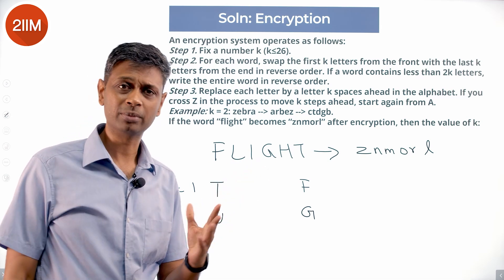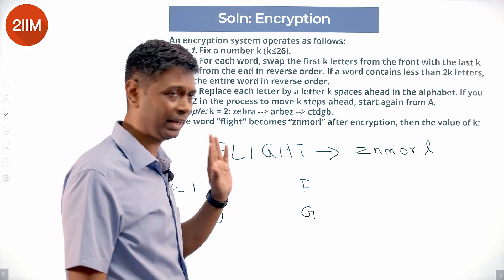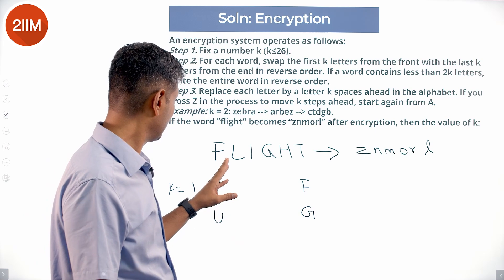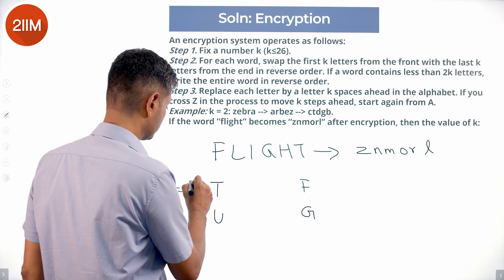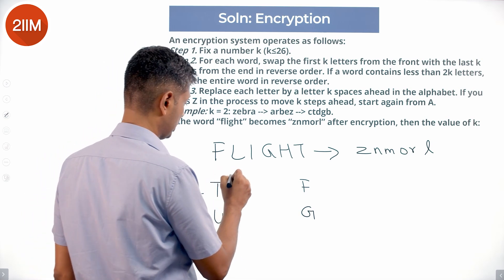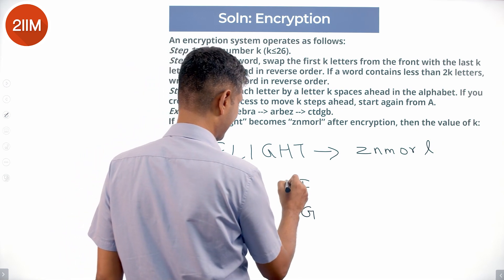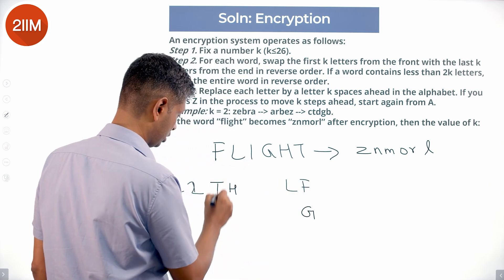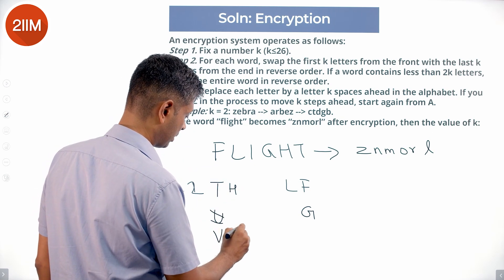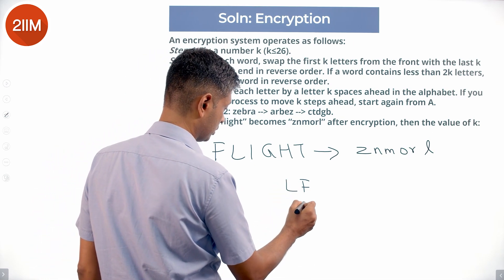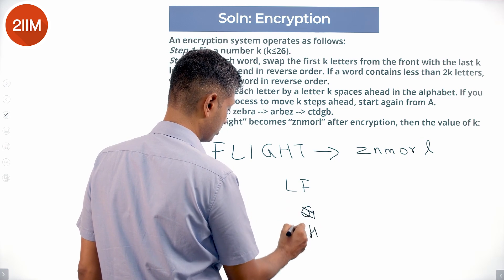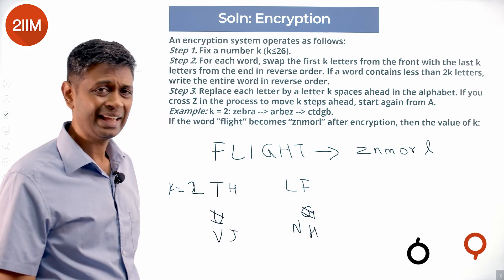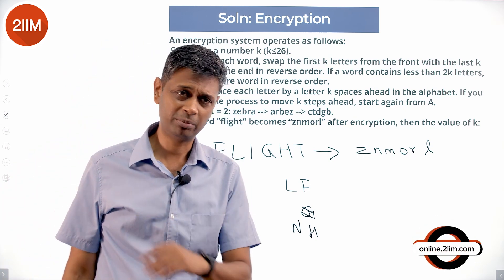Since k is not 1, could k be 2? If k were 2, then T and H would be at the start, and L and F would be at the end. T would become V, H would become J, F would become H, and L would become N. That doesn't match the target Z-N-M-O-R-L either, so k is not 2. Let's check k equal to 3, 4, 5, 6...